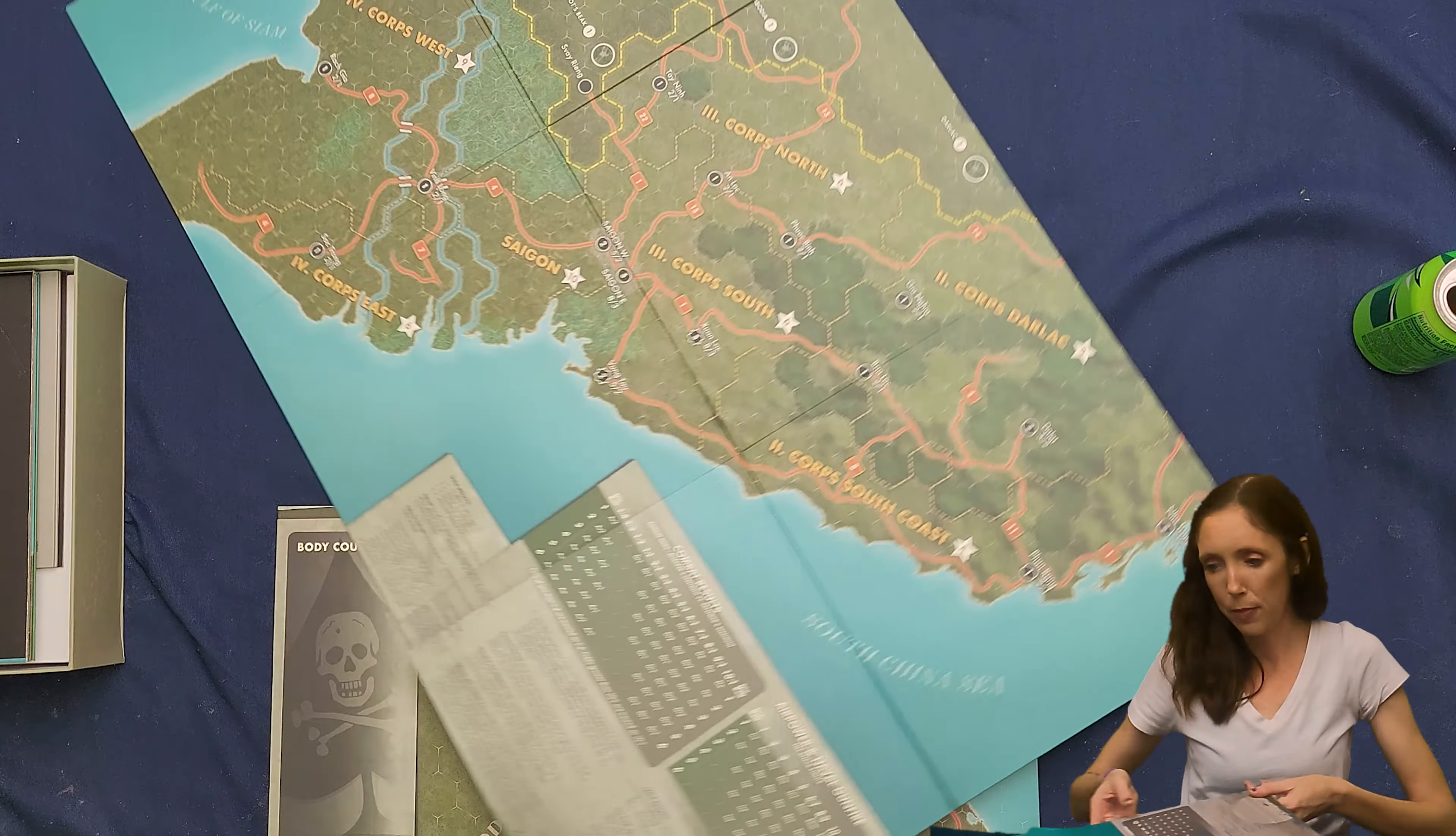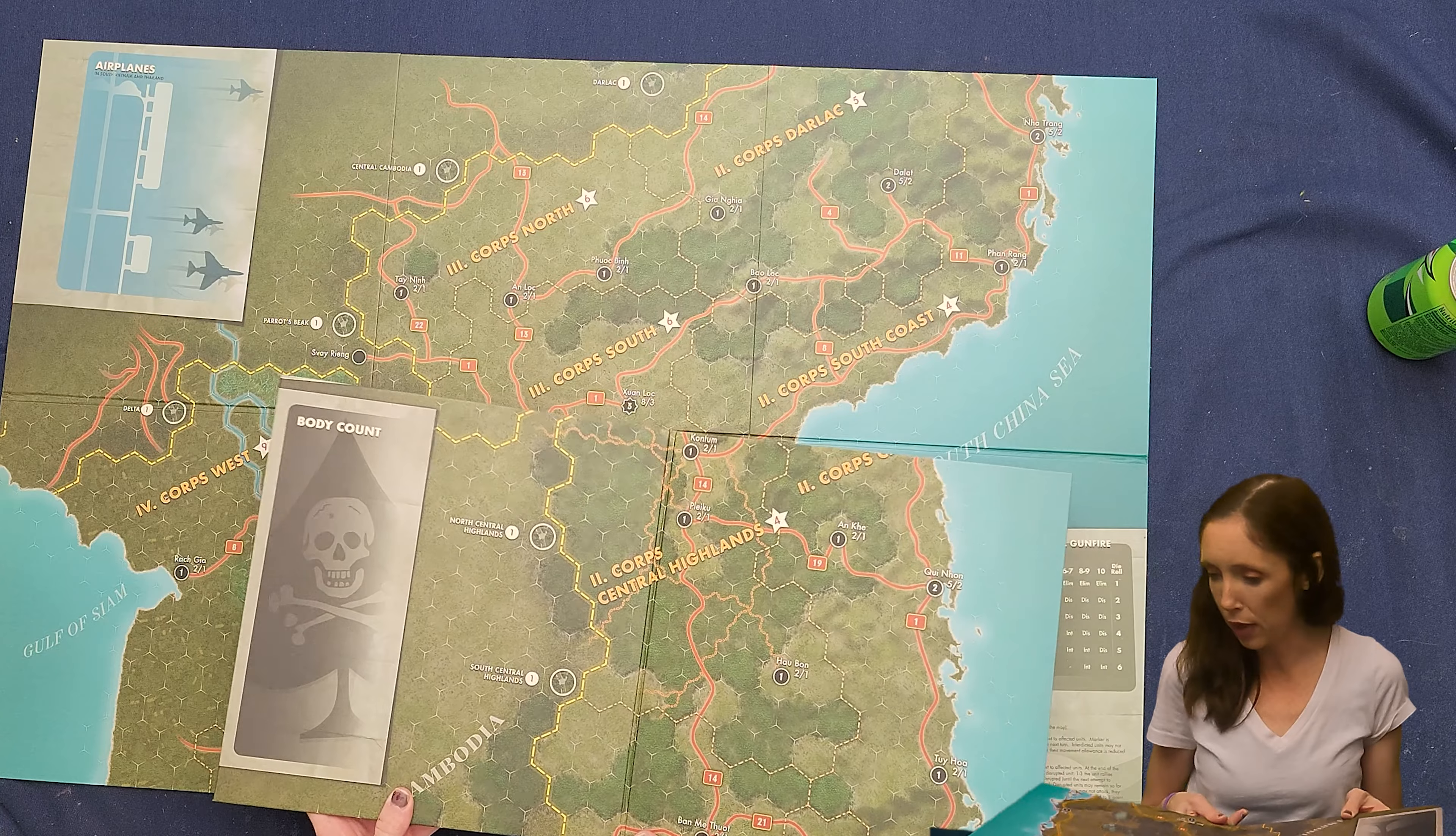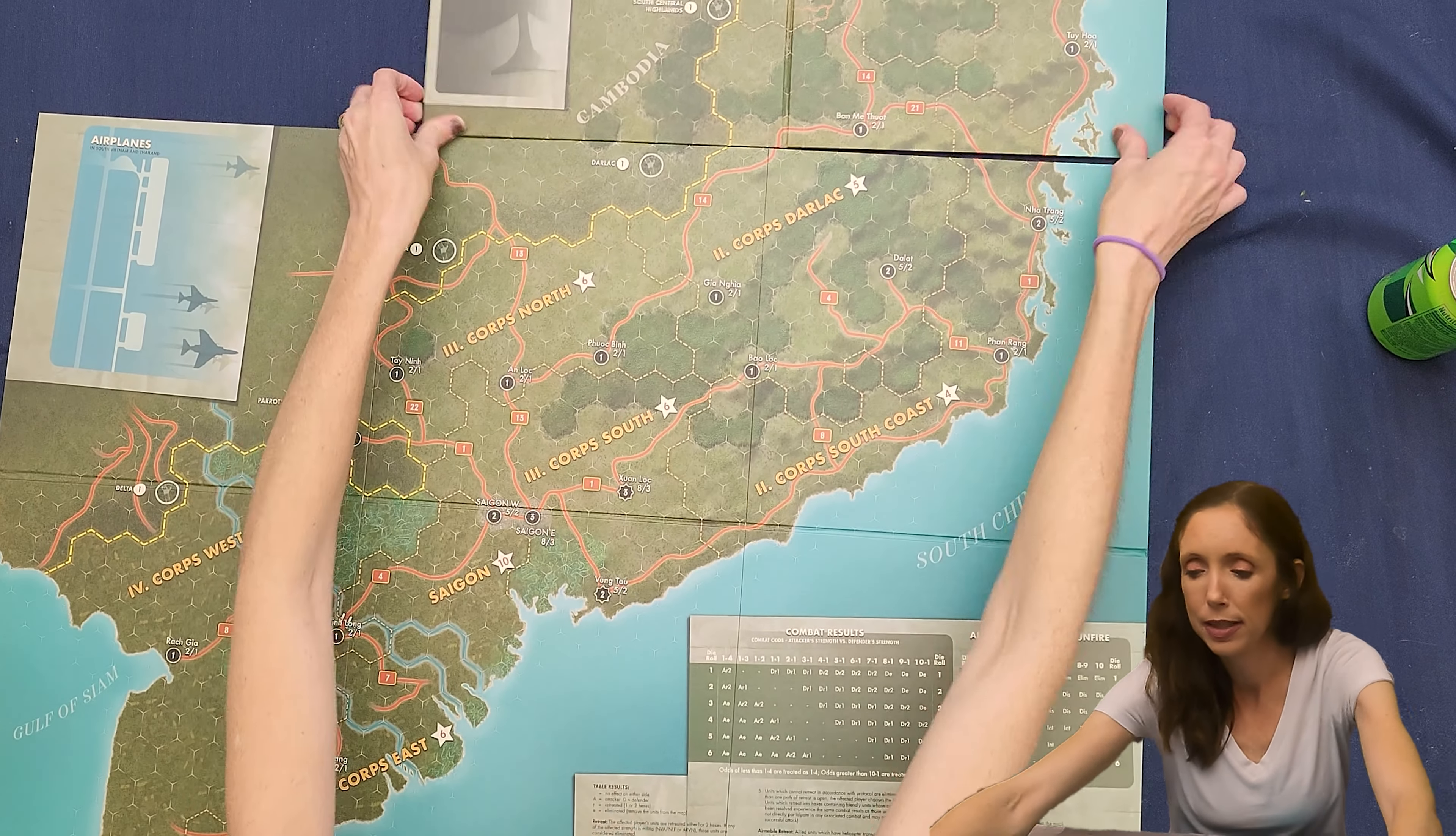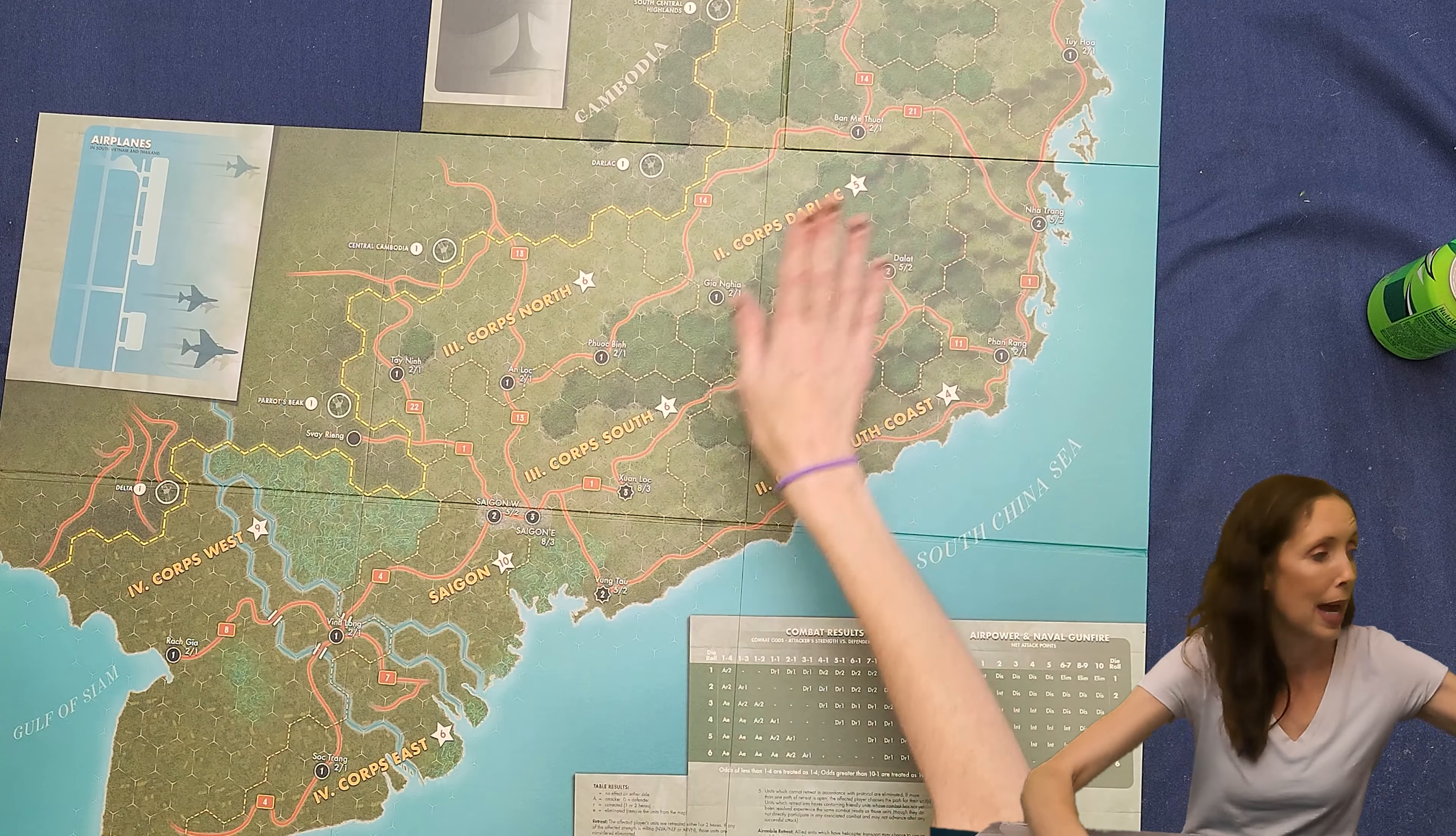Then we have airplanes here. And then this looks like China area. So it's the South China sea. We have combat results, air power and naval gunfire. And then like some results and table stuff down here, but I'm trying to figure out how these go together. Maybe like that. Yay. The map, the lines make it easy because they just line right up perfectly. So I guess it goes like that, but then I don't know where this one goes. Cause it's going to be too big unless